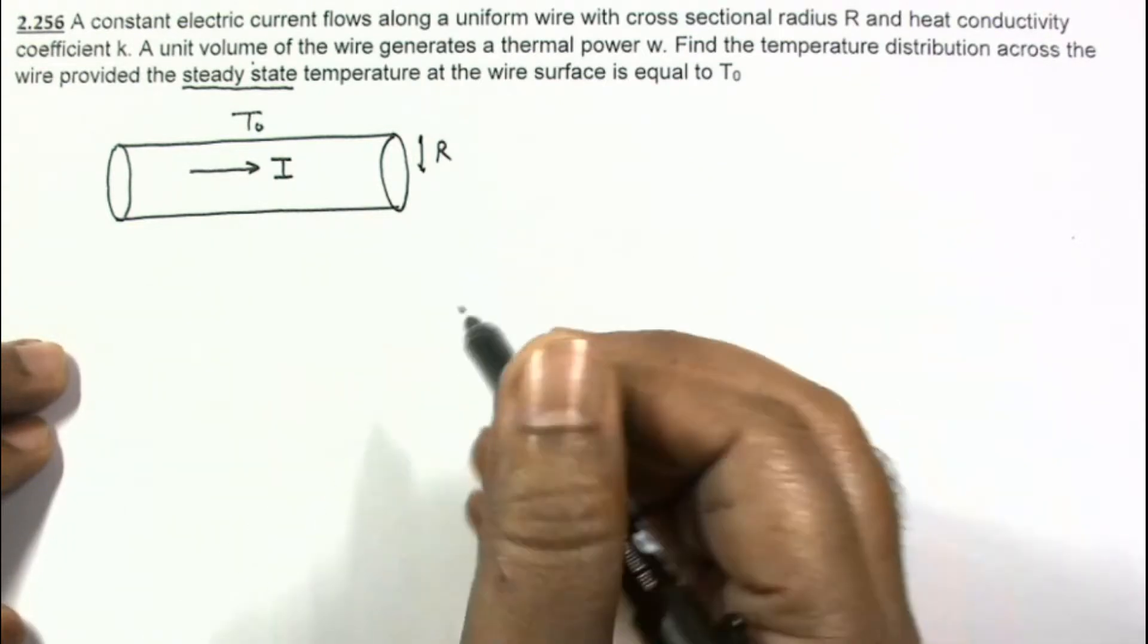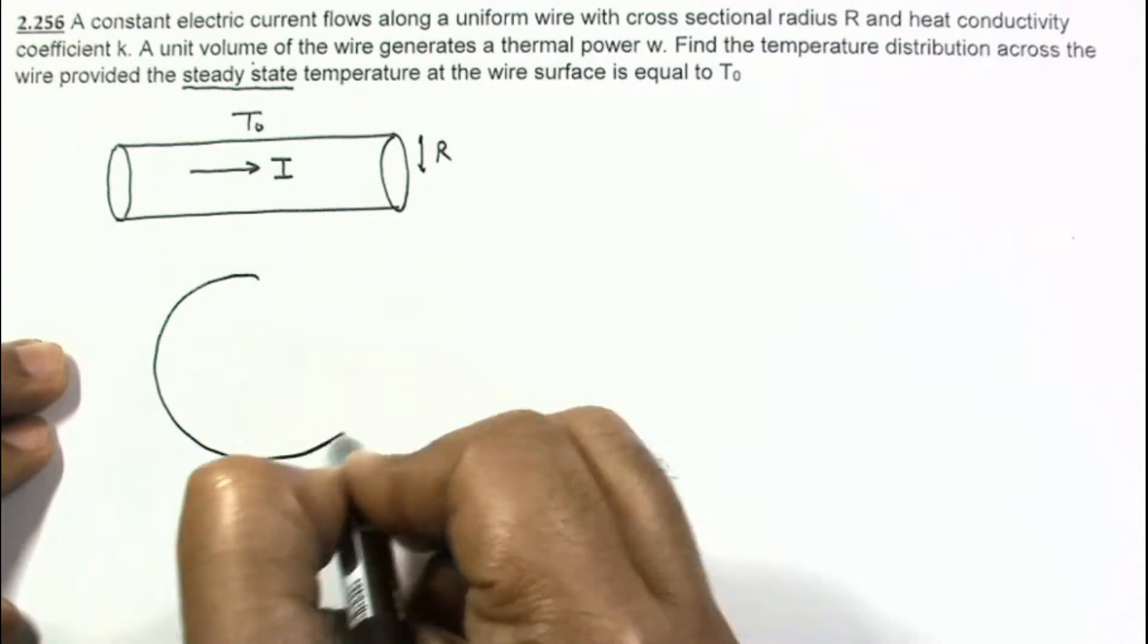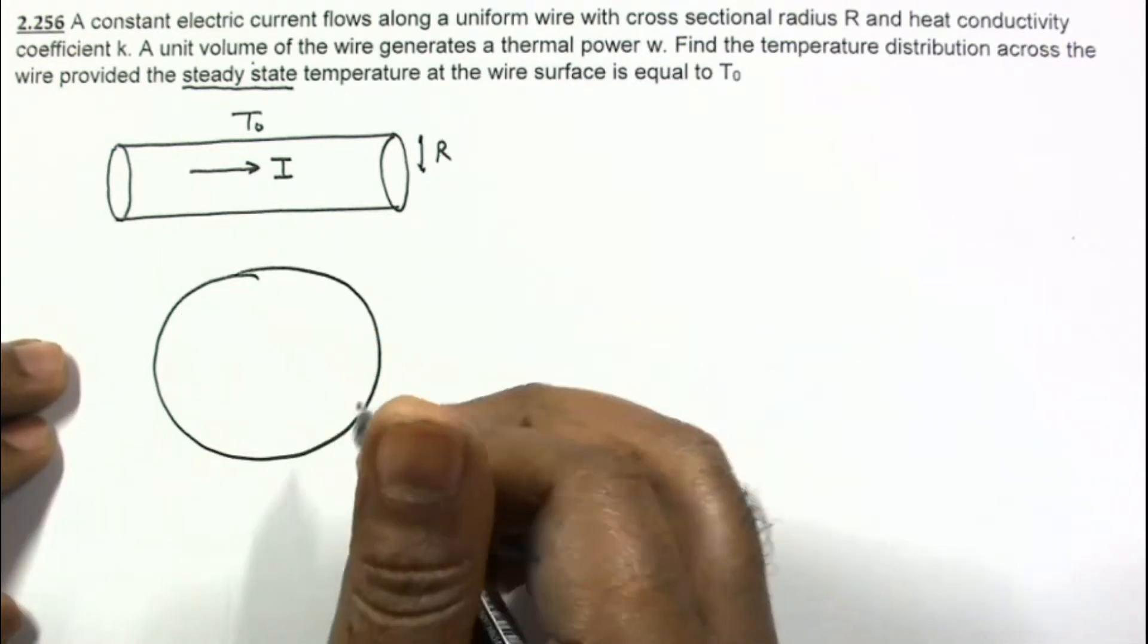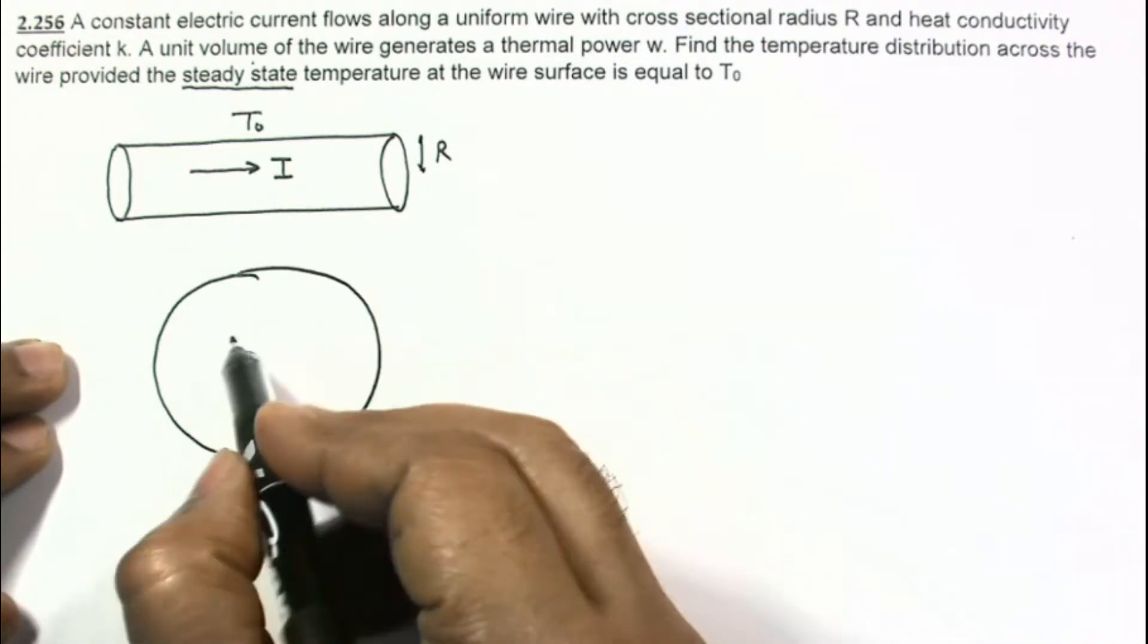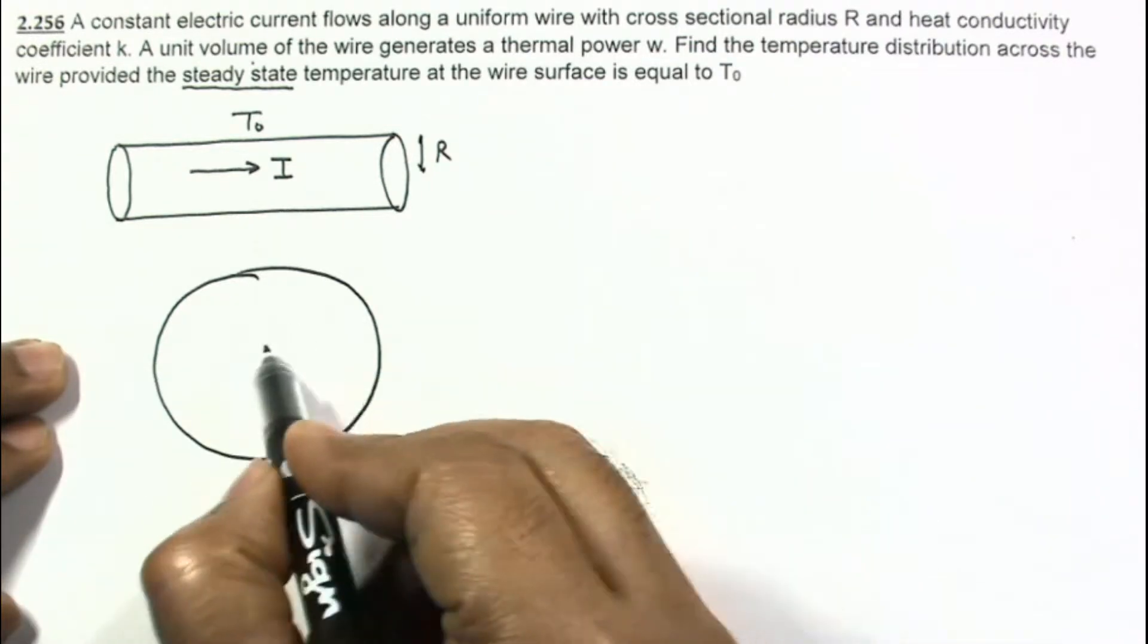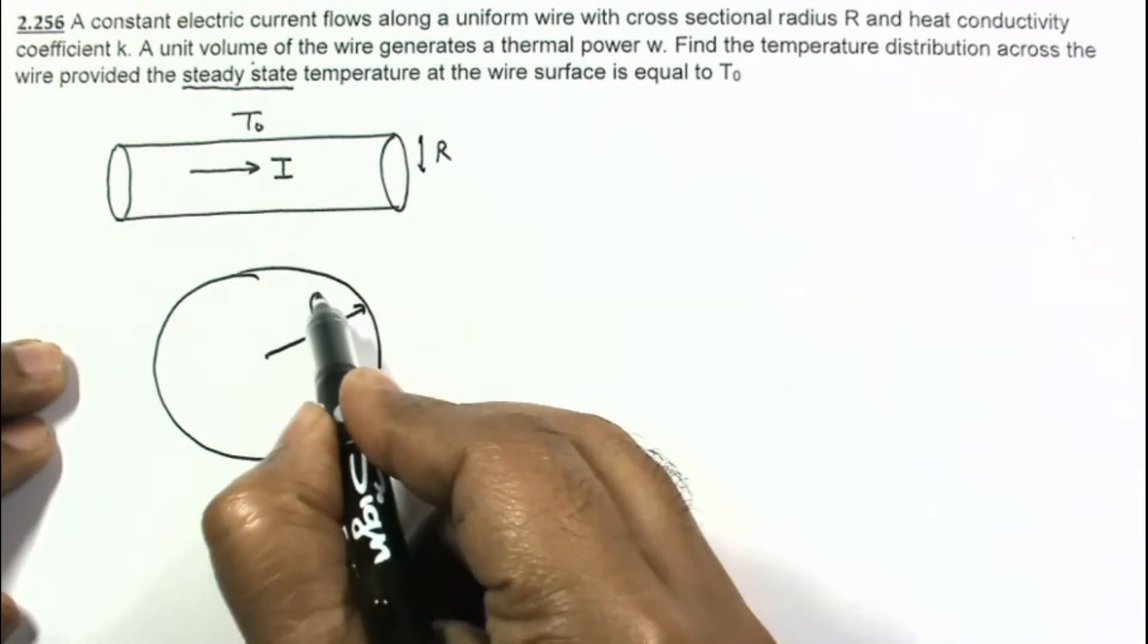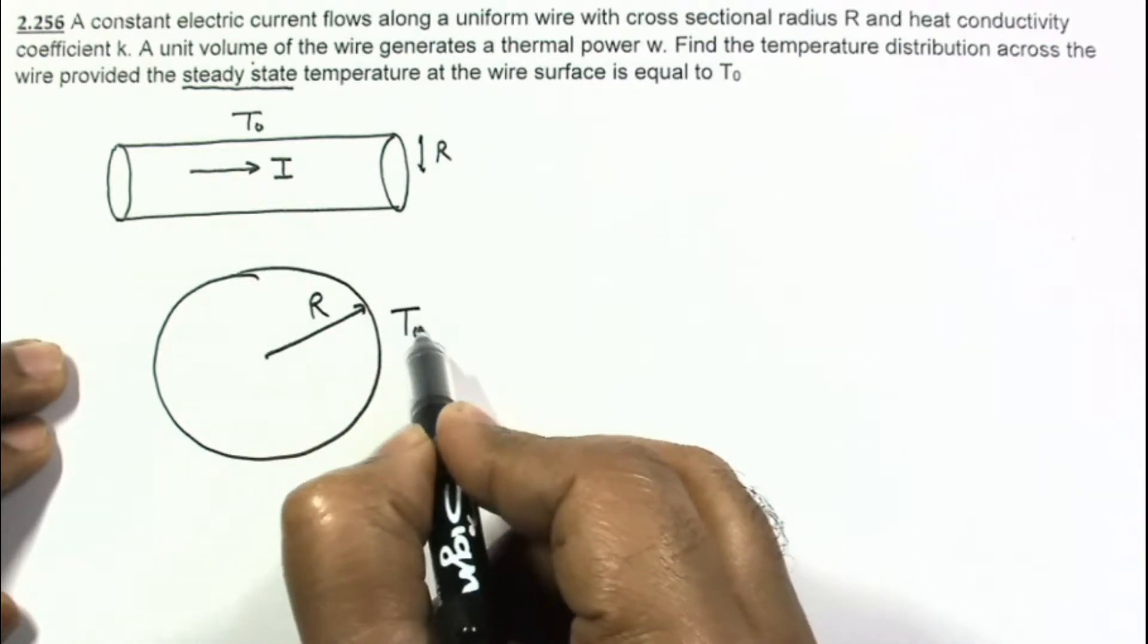Let us make the cross section of this wire. So this is the cross section. And in this cross section, this radius is R and surface temperature is T₀.